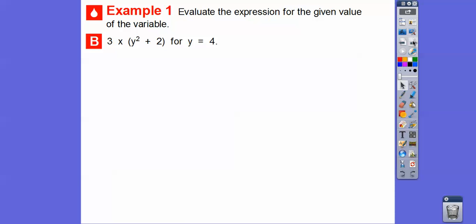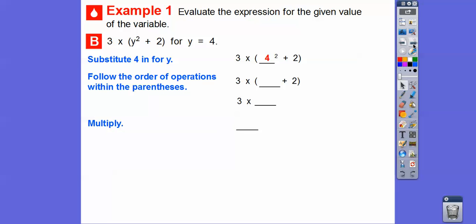All right, so let's try this one. 3 times y squared plus 2, and that's in parentheses. So this actually says 3 times the quantity y squared plus 2. And we're going to plug in y equals 4 right there. So let's go ahead and substitute in 4 in for the y. Then we'll follow the order of operations.